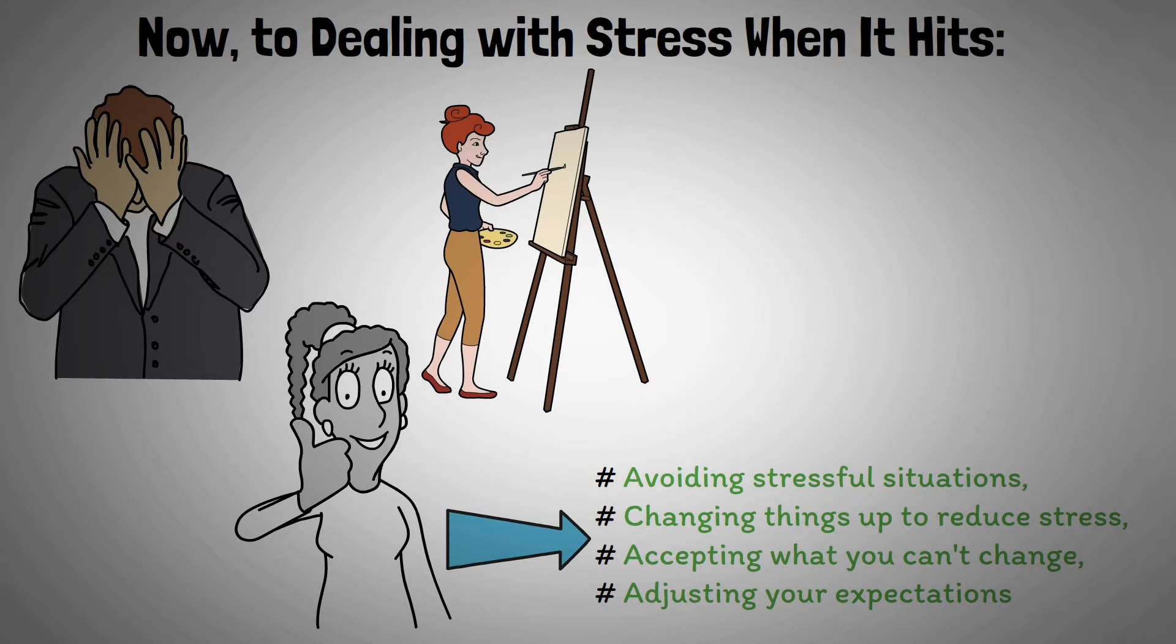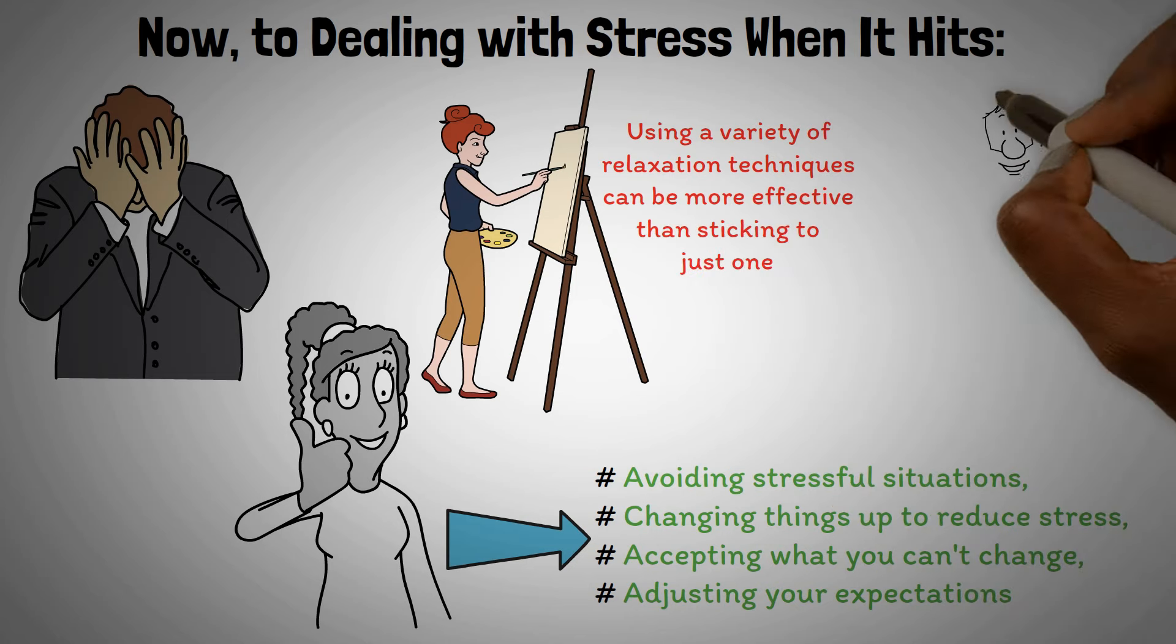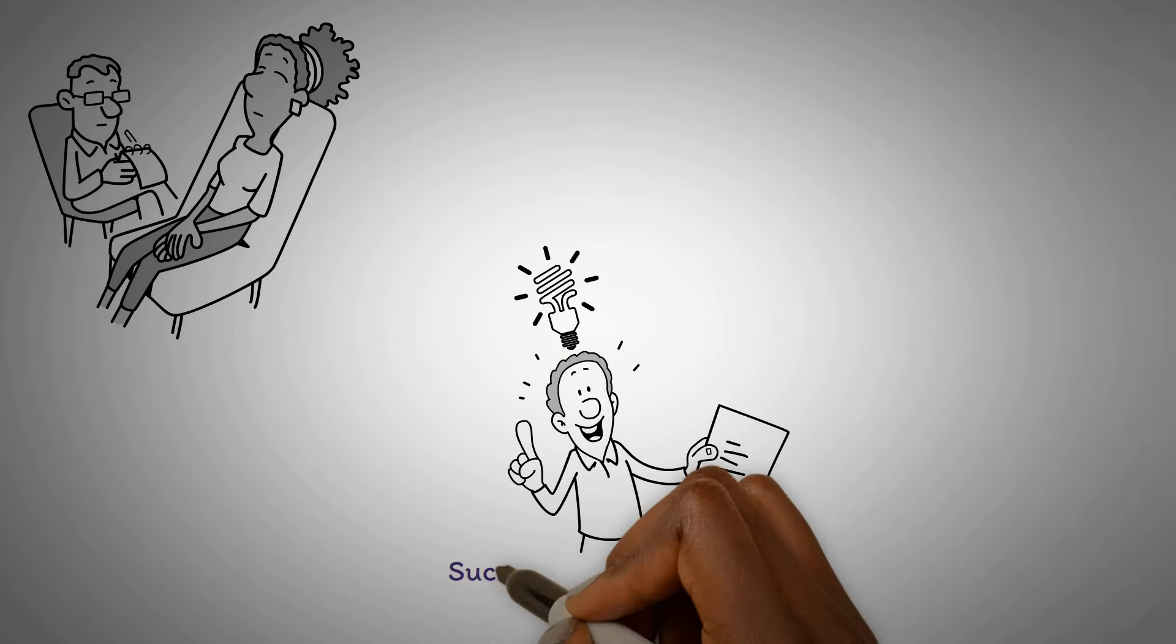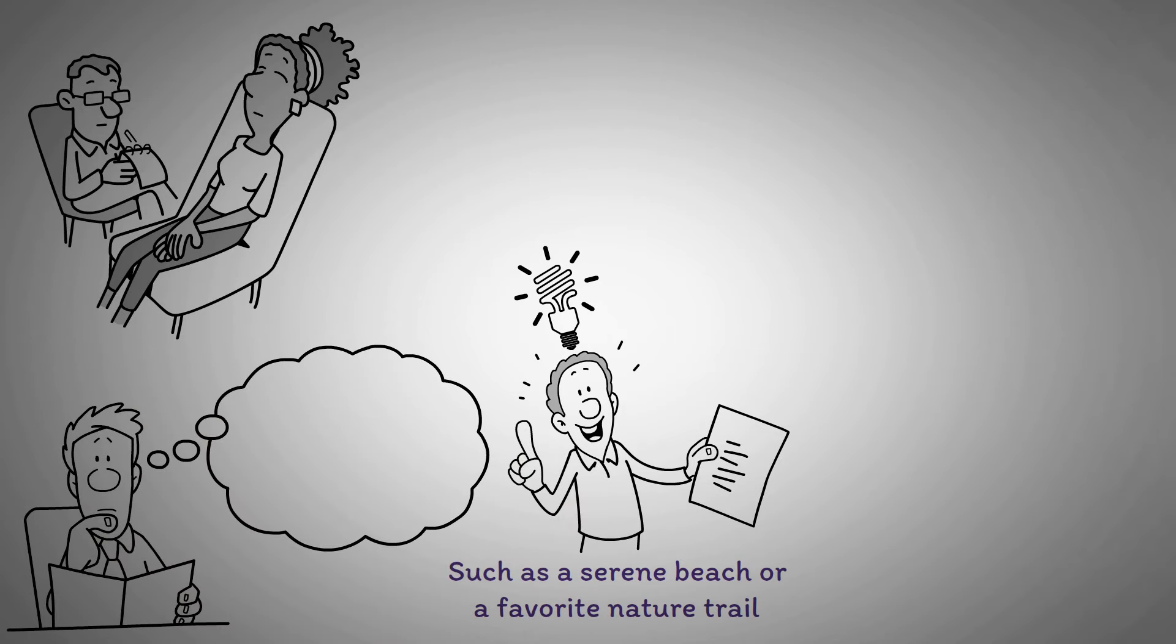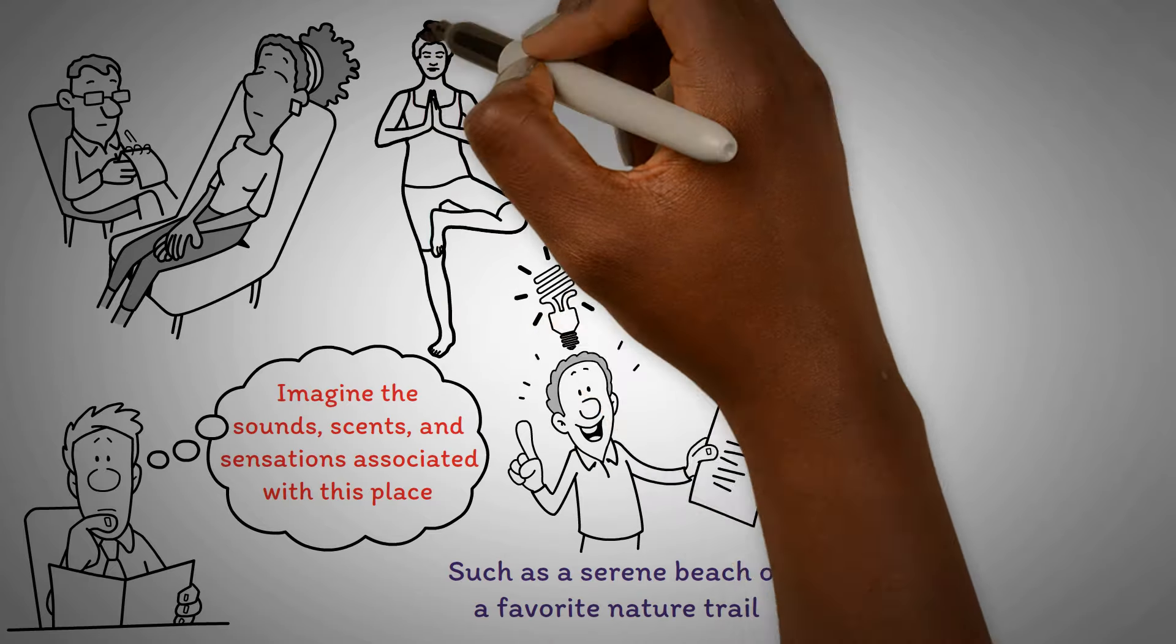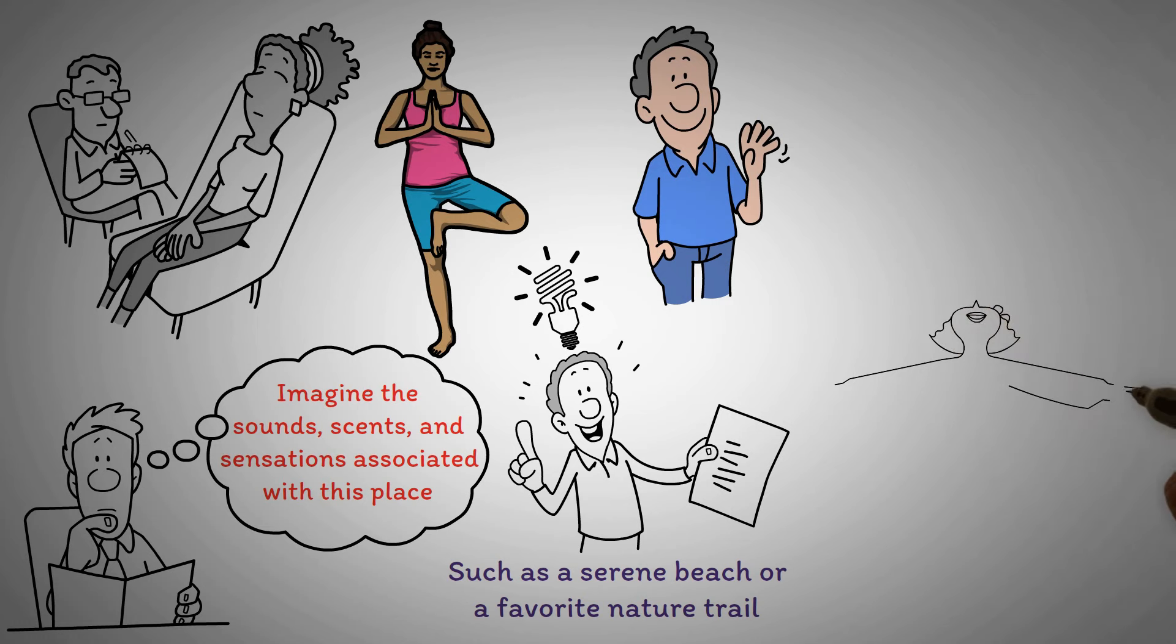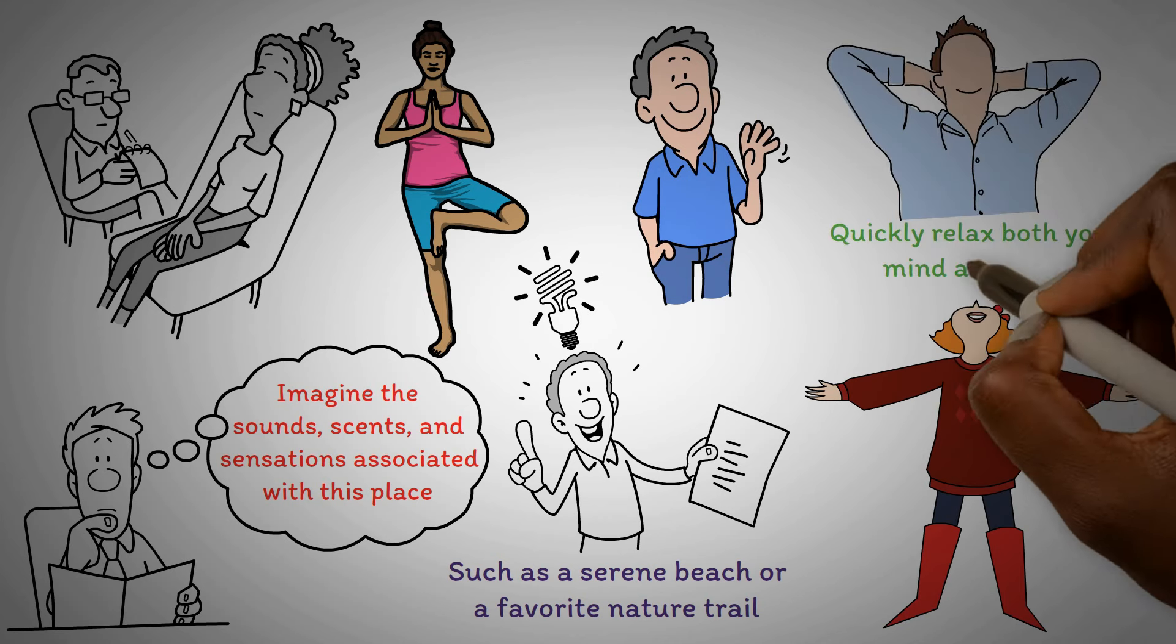When quick stress relief is needed, using a variety of relaxation techniques can be more effective than sticking to just one. Try this multisensory method for an immediate calming effect. Begin by closing your eyes and taking deep, slow breaths. Focus on a positive, peaceful image that brings you joy, such as a serene beach or a favorite nature trail. Enrich this visualization with other senses. Imagine the sounds, scents, and sensations associated with this place. Spend about 5 to 10 minutes deeply engaged in this mental retreat. Afterward, envision tucking this calming scene away in your pocket for future use. Gently open your eyes, stretch out, and breathe deeply.